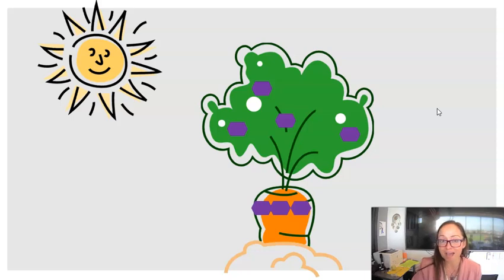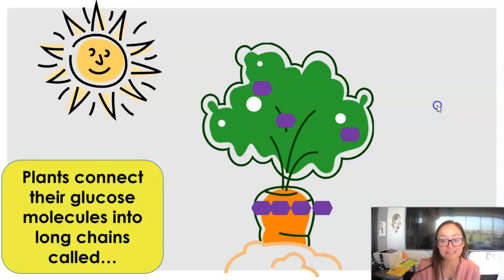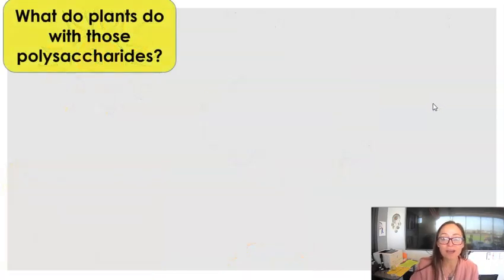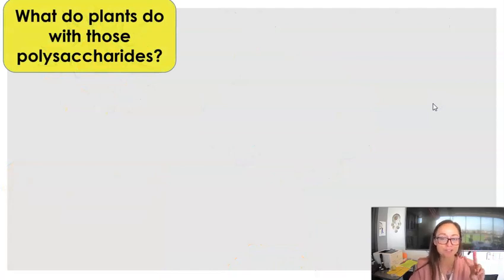So glucose is the monosaccharide of carbohydrates, and they join together in long chains called polysaccharides. So polysaccharides are a chain of many glucose molecules, or glucose monomers. So let's go ahead and see the two functions found in plants for polysaccharides.